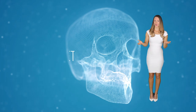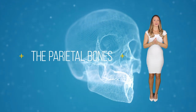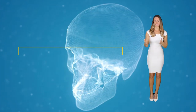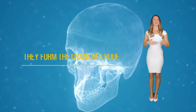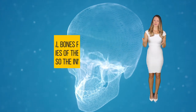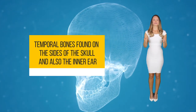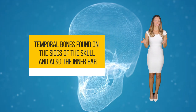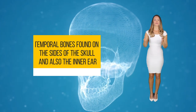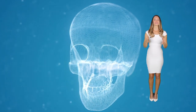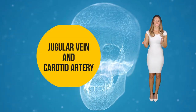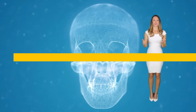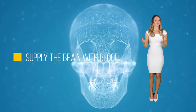The parietal bones are two in number, and when they articulate they form the cranium's roof. The temporal bones are found on the sides of the skull and also house the inner ear. They form a foramen that permits the jugular vein and the carotid artery to supply the brain with blood.